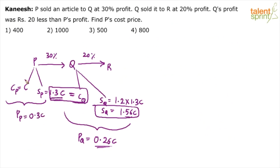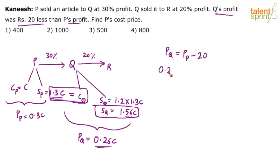You need not write all these steps — I'm explaining in detail so you don't get confused. The key values are 1.3C and 1.56C, giving profit of Q as 0.26C. According to the question, profit of P is 0.3C, and Q's profit is 20 less than P's profit. So: 0.26C = 0.3C − 20, which simplifies to 0.04C = 20.